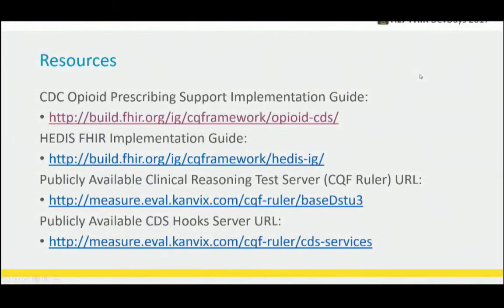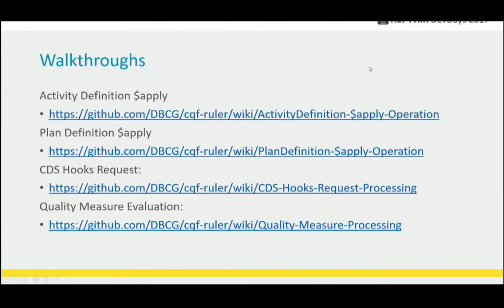There's also a HEDIS FHIR implementation guide, a publicly available clinical reasoning test server. If you hit that endpoint, you can actually post the plan definition to it and it'll run. There's also a CDS hooks server running on that endpoint — one of the ones we're using in the track. There are also some walkthroughs on the wiki where you can step through all the components involved and get some code. There are also some starter projects in the repository — simple Java projects you can download and compile to get the calculations running.